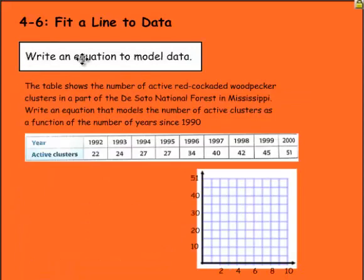In this problem, we actually have to write an equation to model our data. The table shows the number of active red-cockaded woodpecker clusters in a part of the DeSoto National Forest in Mississippi. It says write an equation that models the number of active clusters as a function of the number of years since 1990. The first step is to make a scatter plot of the data. What I've done is years since 1992, so 1992 would just be zero here. We're going to start at 22. We'll make this line in red so we can see it better. So zero and 22.